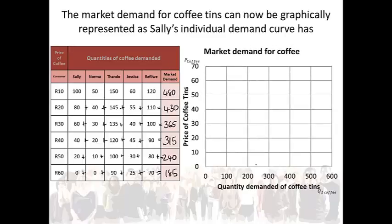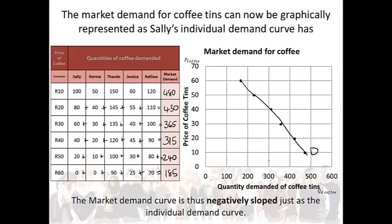At a price of 10 rand, the quantity demanded is 480. At a market price of 20 rand, the market demand is 430. At a price of 30 rand, the market demand is 365. At a price of 40, the market demand is 315. At a market price of 50 rand, the market demand will be 240. And lastly, at a market price of 60, the total market demand will be 185. Now we can connect these dots to get the market demand curve. The market demand is negatively sloped, just as the individual demand curves.